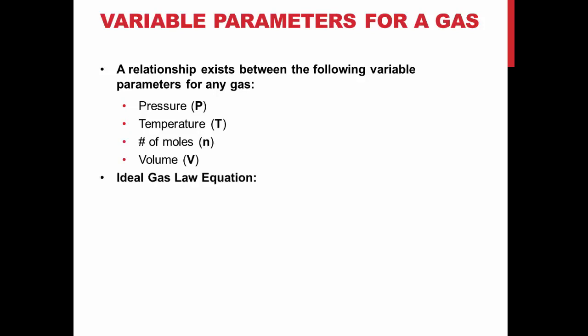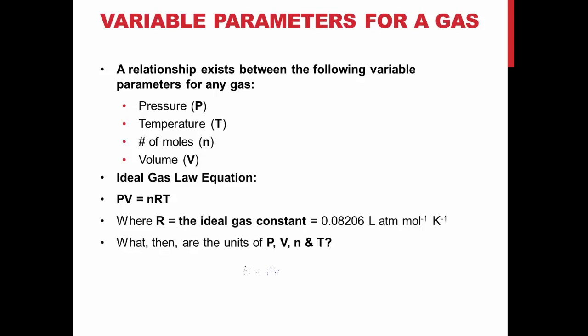The ideal gas law provides the relationship between the above variables where PV equals NRT. The ideal gas constant, R, has a value of 0.08206 liters times atm per mole Kelvin. If you solve for any variable in the equation, you will find the units of the remaining variables cancel out, giving you the desired units for your value. Most gases obey this law at low pressures and relatively high temperatures.